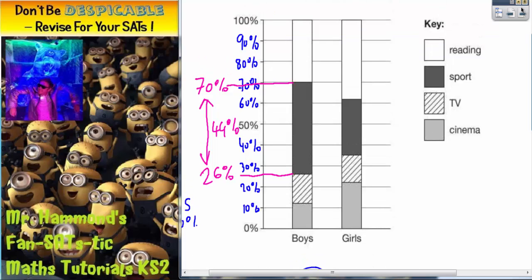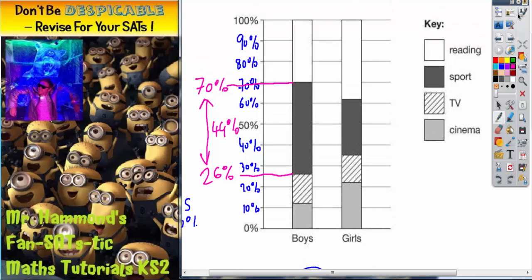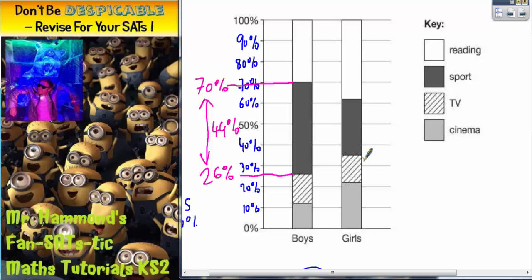So, all we're going to do now is do a similar sort of thing for the girls. Well, the girls' sport bar starts here and ends here. Well, this line is halfway between 30% and 40%. So, this line we will call 35%. And this line is a bit higher than 60%. Probably about a fifth of the way of this gap here. So, we'll call this one about 62%.